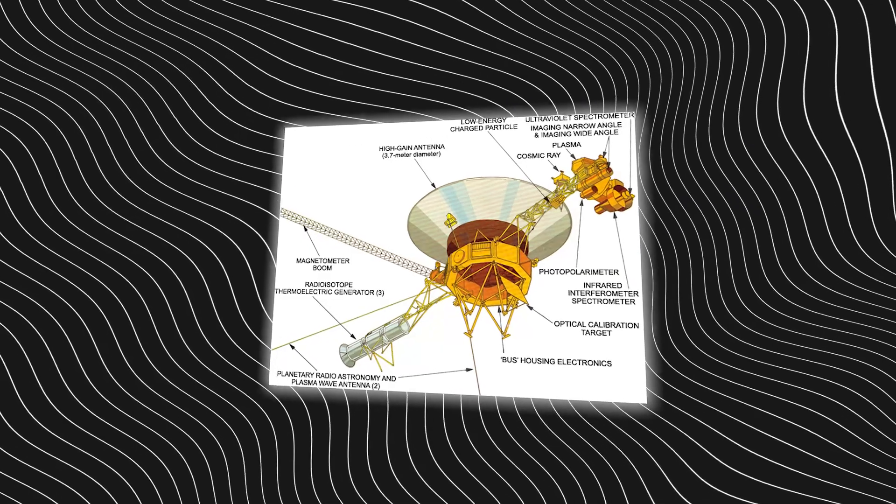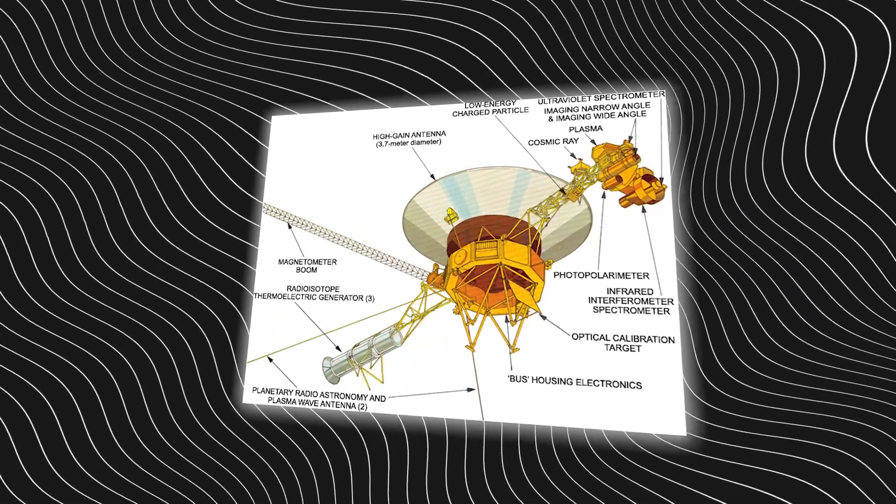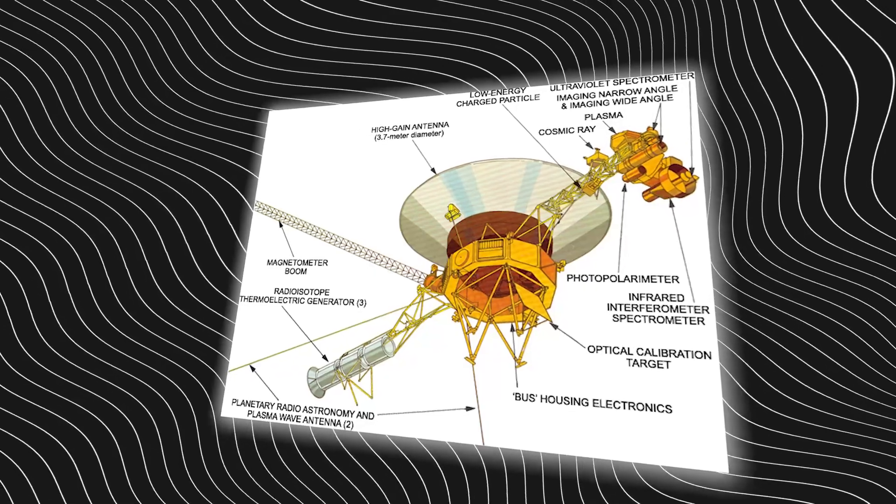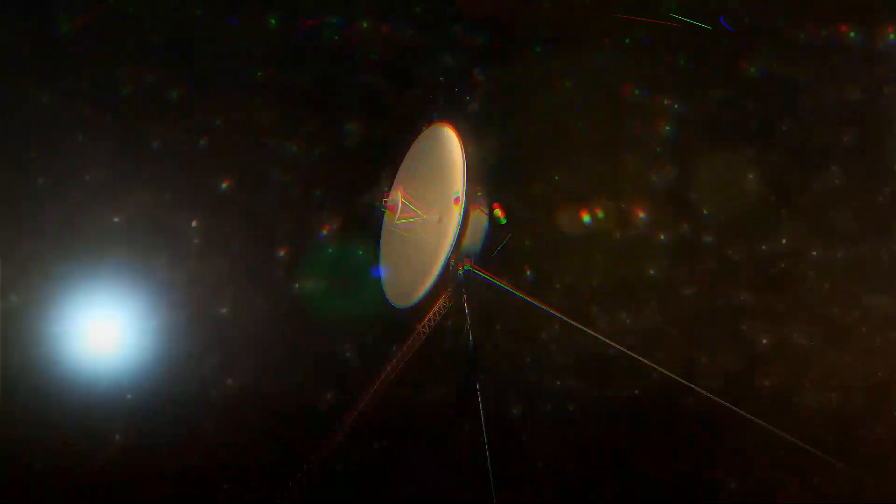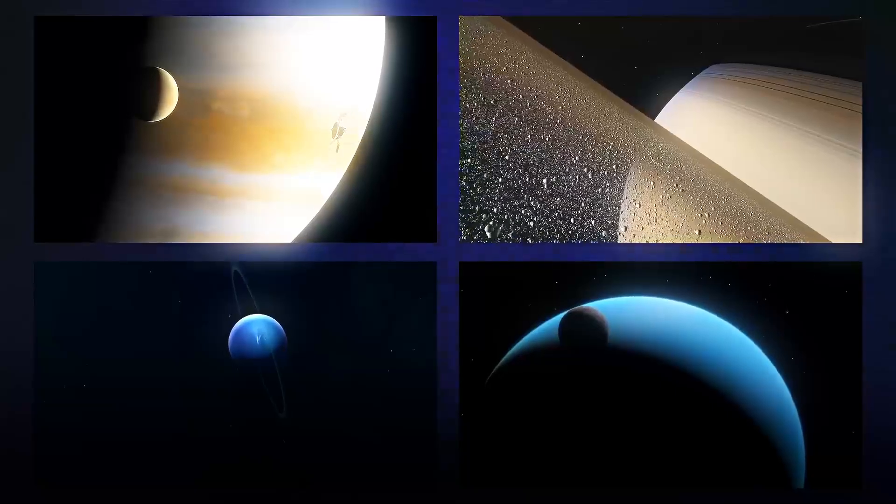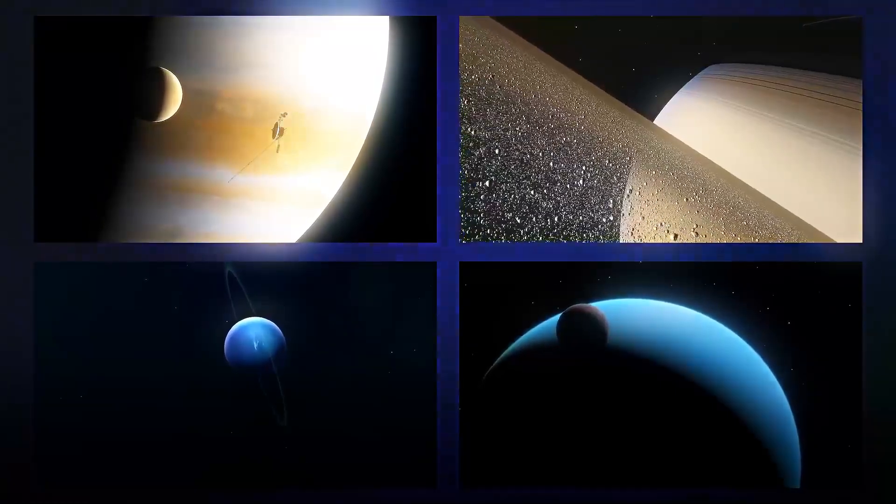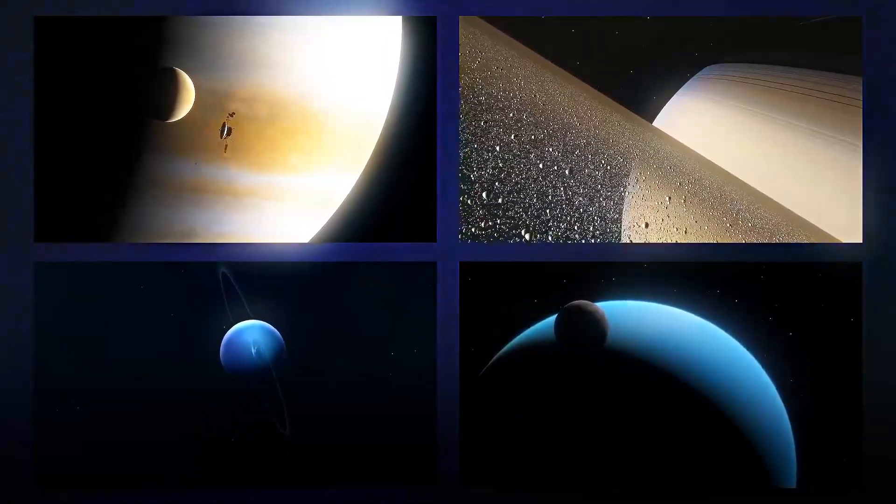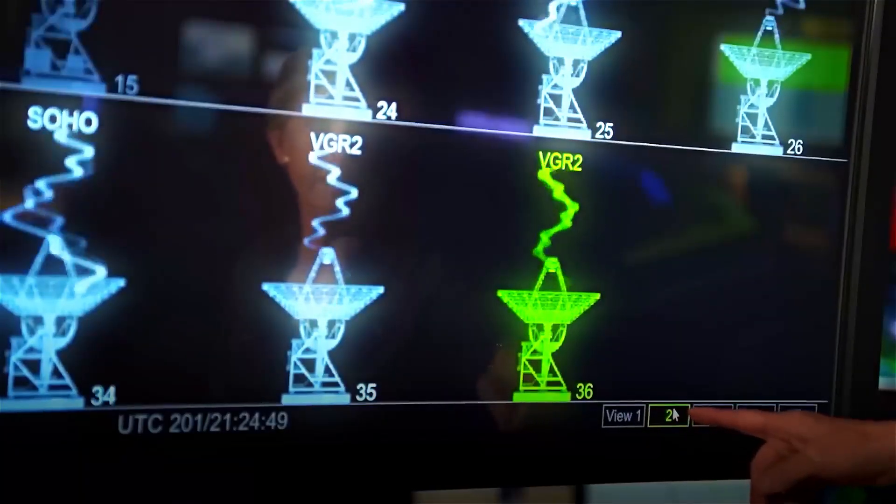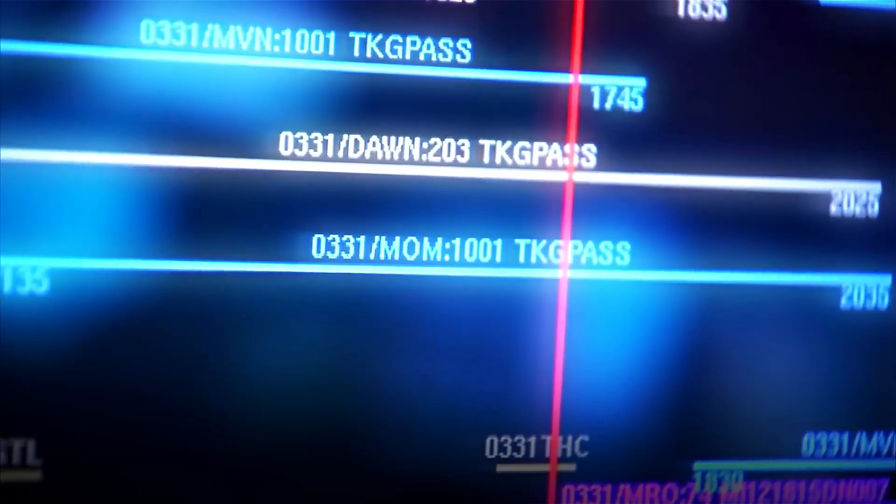Despite this, all five instruments on the spacecraft have been operating without their heaters since 2019. NASA scientists are still astonished by how the Voyager spacecraft continue to function well beyond their expected lifespan and in temperatures far colder than originally designed for.